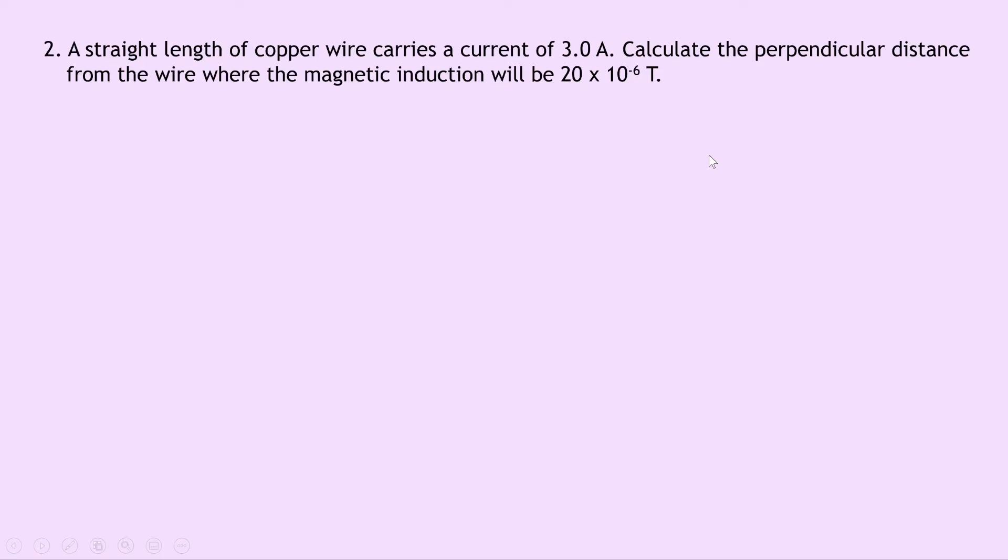Well writing down what we know from the question we're trying to find the perpendicular distance r away from the wire. We know the magnetic induction B is 20 × 10⁻⁶ tesla. We know that μ₀ is 4π × 10⁻⁷ henrys per metre from the datasheet, and lastly the current I is 3.0 A.